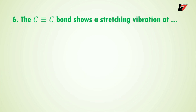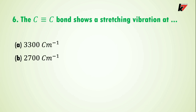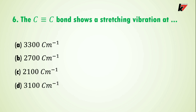Question 6: the carbon-carbon triple bond shows a stretching vibration at — option A is 3300 cm⁻¹, option B is 2700 cm⁻¹, option C is 2100 cm⁻¹. The correct answer is option C: the carbon-carbon triple bond shows a stretching vibration at 2100 cm⁻¹.